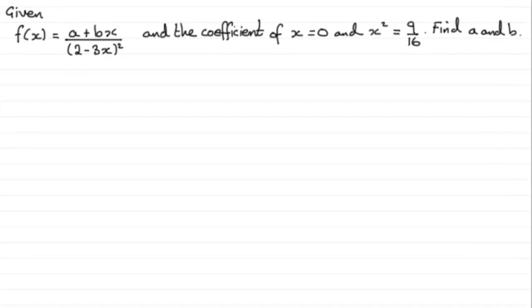In this question we're given that f(x) equals (a + bx) divided by (2 - 3x) all squared. We're also told that in the binomial expansion of f(x), the coefficient of x is 0 and the coefficient of x² is 9/16, and we need to find the values of a and b.